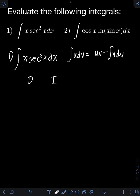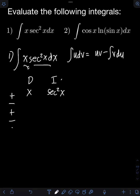Using the DI method, we will choose the functions to be differentiated and integrated from the given integral. We prioritize choosing first the function that can be integrated easily — we can choose from x or sec squared x. Both can be integrated easily, so I will select sec squared x as the function to be integrated, and the remaining function x is the one we will differentiate. At the side, we must have a sign convention: alternating signs plus, minus, plus, minus, and so on, extended depending on the number of times we differentiate and integrate.